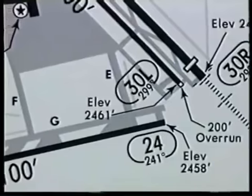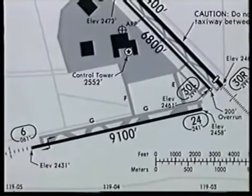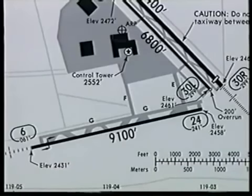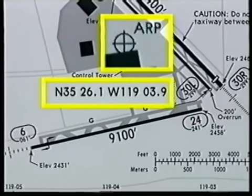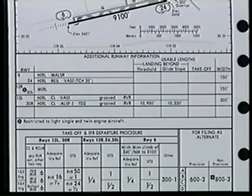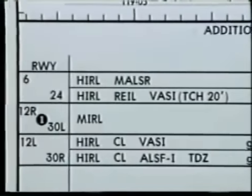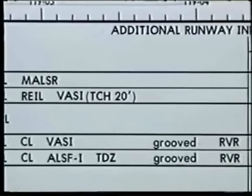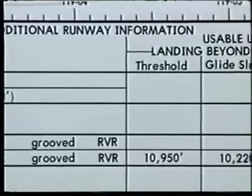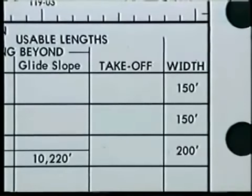When appropriate, taxiways are labeled by letter designators. Notice that Terps Taxiway Gulf is a parallel taxiway for Runways 6 and 24. The airport reference point, abbreviated ARP, shows the intersection of the geographical coordinates published for the airport. Keep in mind that an ARP may not be designated for every airport. The additional runway information section presents more detailed information than can be shown on the plan view. Included in this section is a listing of each runway, with its lighting systems, including VASI or related systems, and whether the runway is grooved. Also included are the usable lengths of the runways beyond the threshold and glide slope, and the usable takeoff distance if the takeoff is restricted. The last column shows the width of the runways.